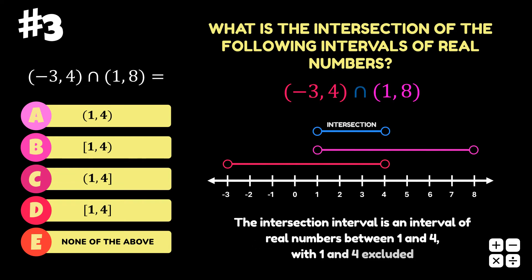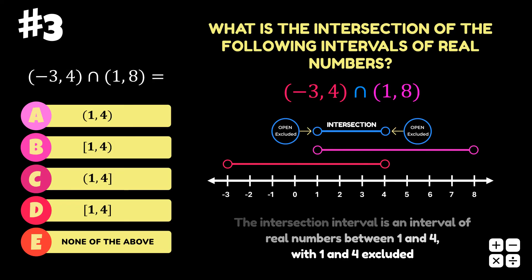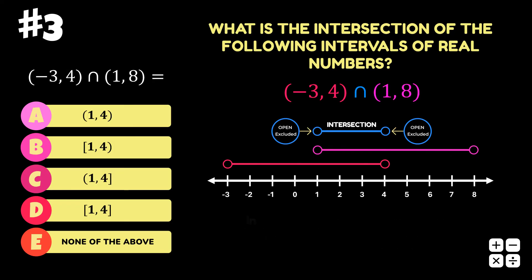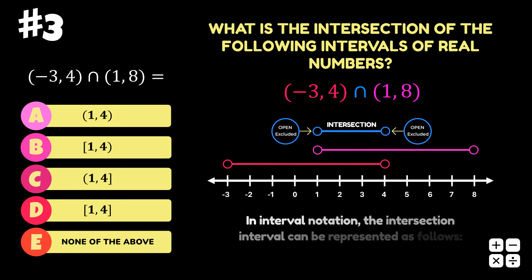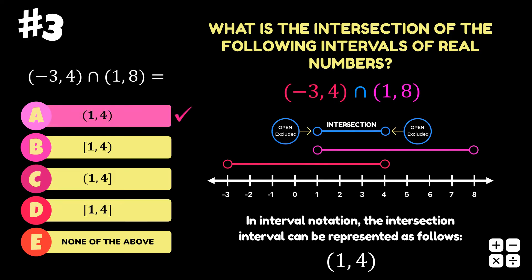Therefore, the intersection interval is an interval of real numbers between 1 and 4, with 1 and 4 excluded. In interval notation, this interval can be represented as follows. Hence, the answer to this question is option A.